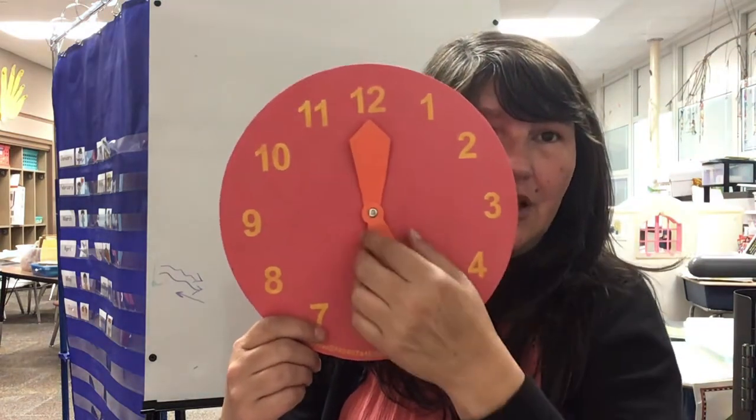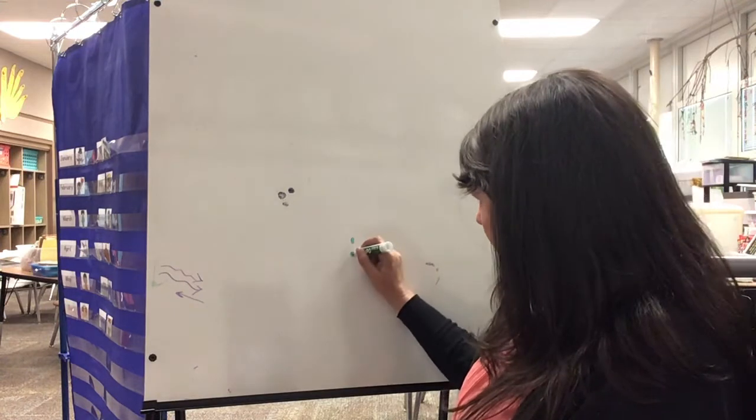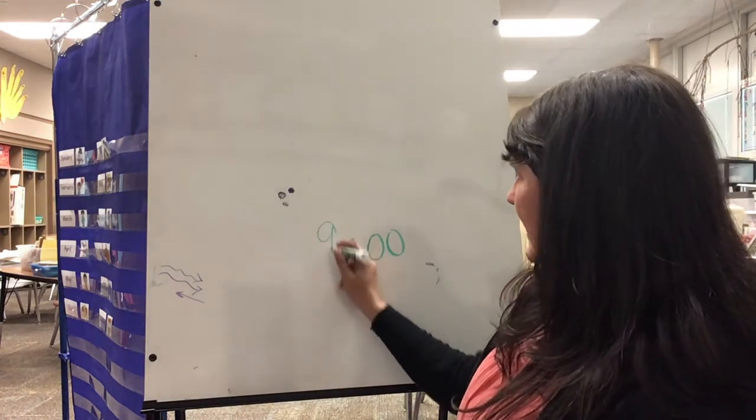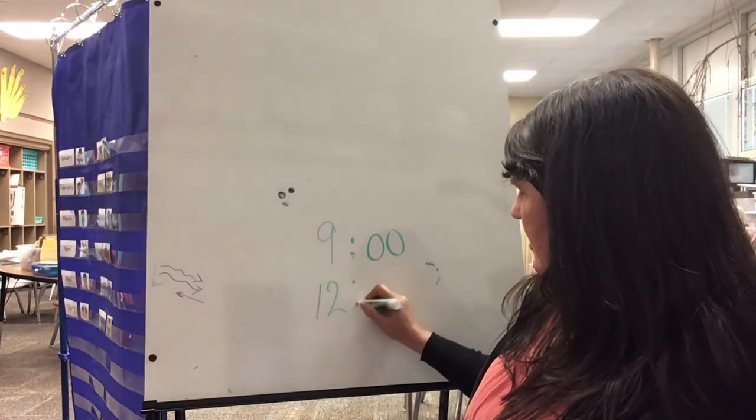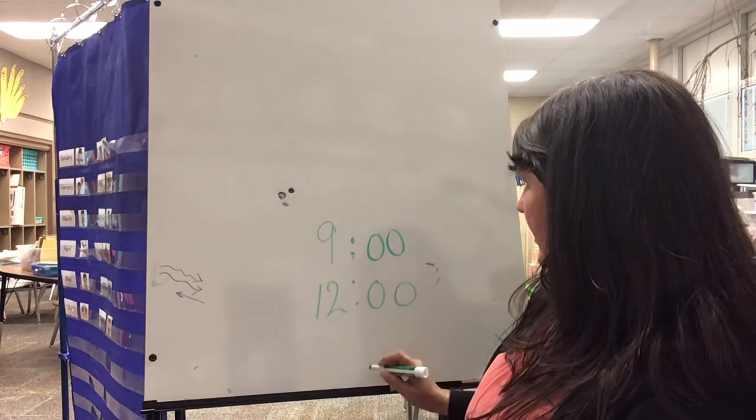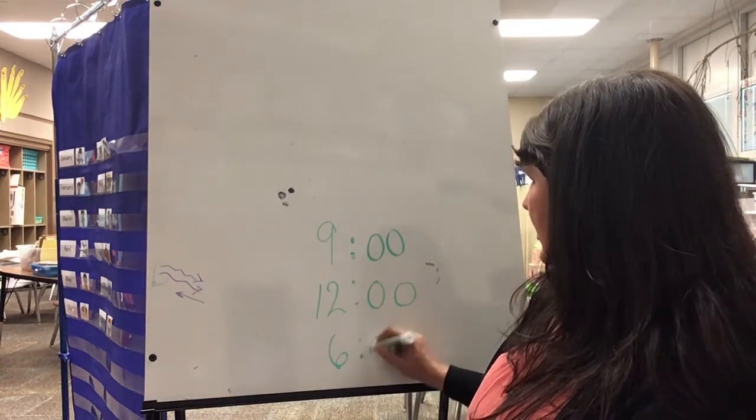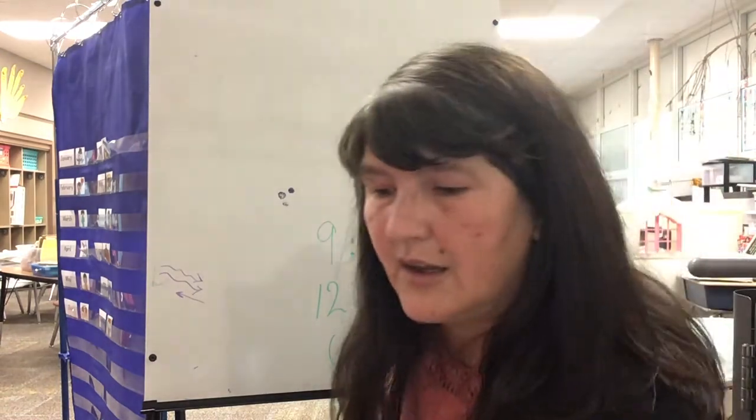All of the times we're telling are to the hour. So that means that if I were looking at a digital clock: zero zero, nine o'clock, twelve o'clock, and six o'clock. We've spent a little time with that.